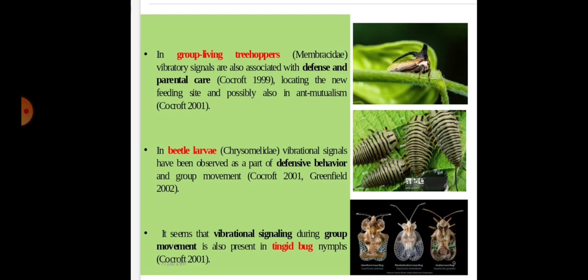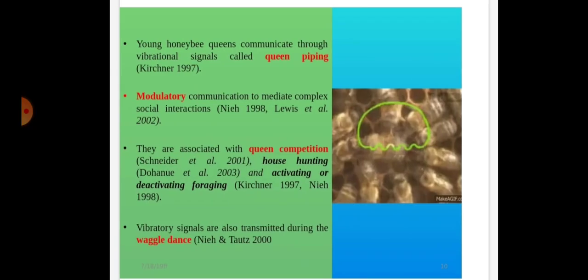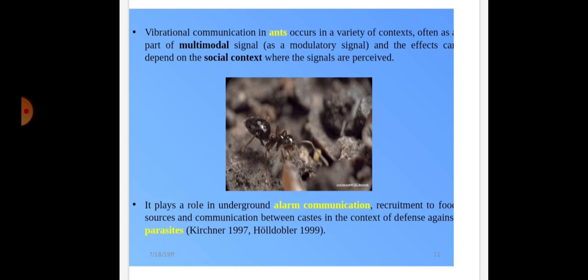In group-living tree hoppers which belong to the family Membracidae, vibratory signals are associated with defense and parental care, locating new feeding sites, and possibly ant mutualism. In chrysomelid beetles, vibrational signals have been observed as part of defensive behavior and group movement. Young honeybee queens communicate through vibrational signals called queen piping, associated with queen competition, house hunting and activating or deactivating foraging. Vibratory signals are also transmitted during the waggle dance in honeybees.